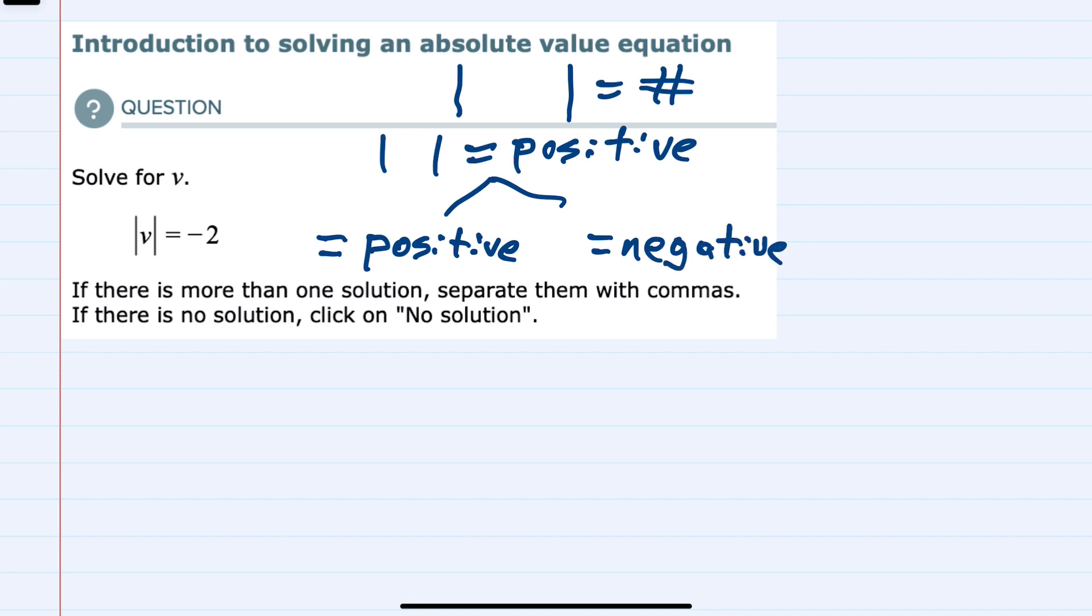However, on the other hand, if we have an absolute value equal to a negative number, that would be no solution. Because the absolute value takes what is inside and makes it positive, it's not going to be possible for it to be equal to a negative number.